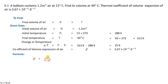Problem 8.4: A balloon contains 1.2 m³ of air at 15°C. Find its volume at 40°C. The coefficient of volume thermal expansion of air is 3.67 × 10⁻³ per Kelvin. Initial volume V₀ = 1.2 m³. Initial temperature T₁ = 15°C + 273 = 288 K. Final temperature T₂ = 40°C + 273 = 313 K.